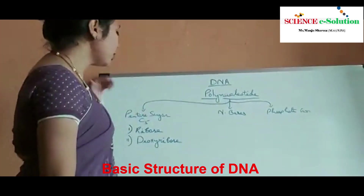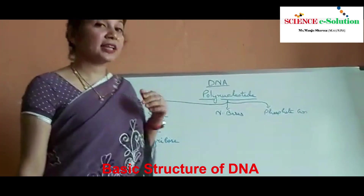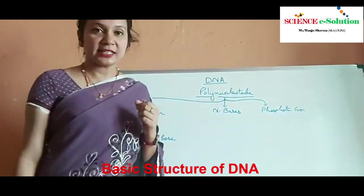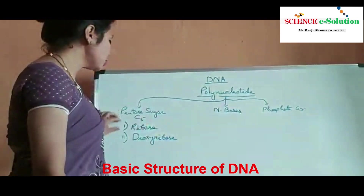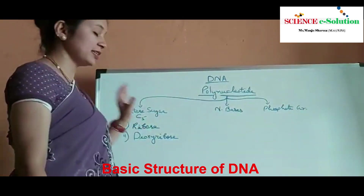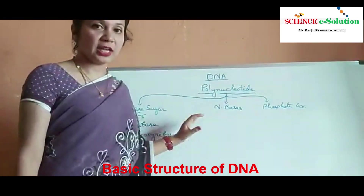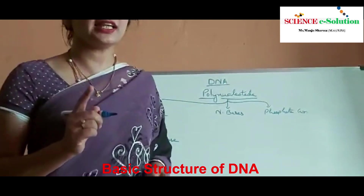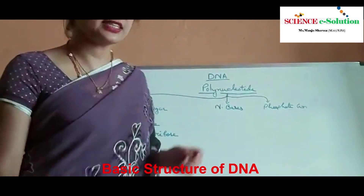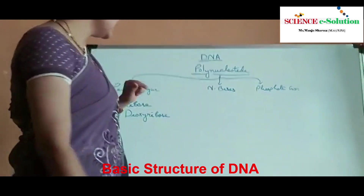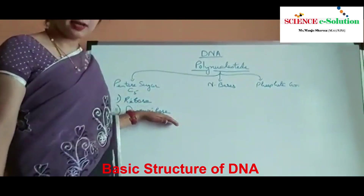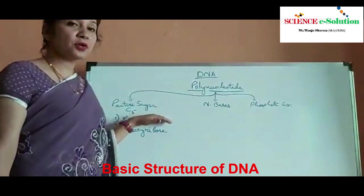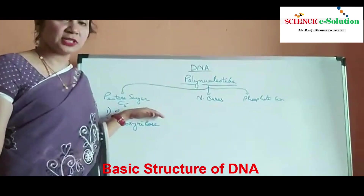The full form of RNA, that is another genetic material, is ribonucleic acid, so ribose sugar is present in RNA. This is the first and the main difference between DNA and RNA — in DNA deoxyribose sugar is present and in RNA ribose sugar is present.